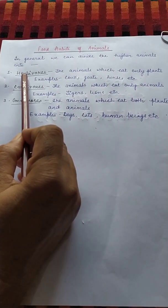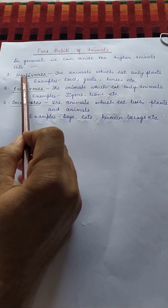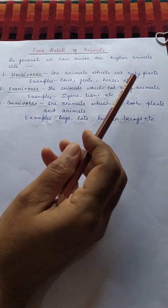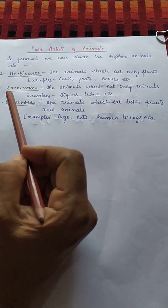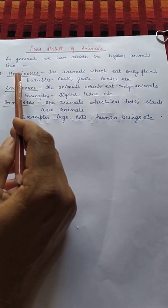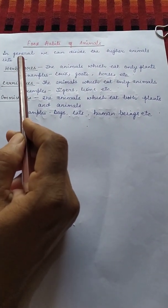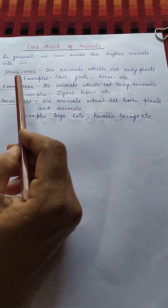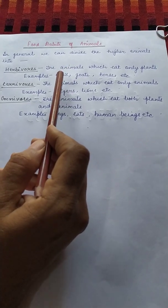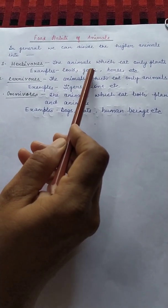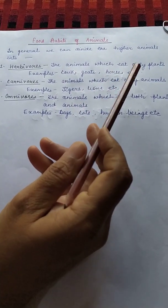Number one: Herbivores. The animals which eat only plants are called herbivores or herbivorous animals. For example, cows, goats, horses, etc.